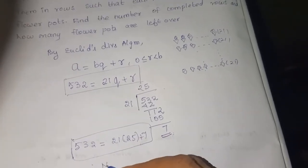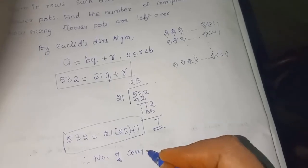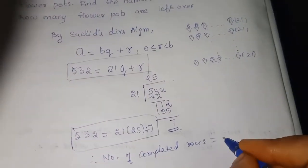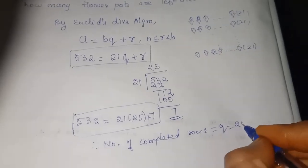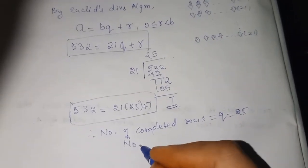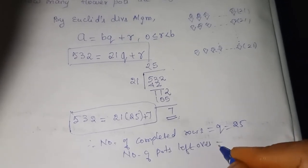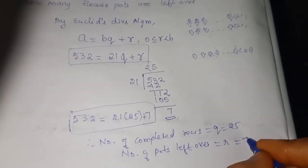Therefore, number of completed rows is equal to our quotient Q equals 25. And number of parts left over is equal to our remainder equals 7.